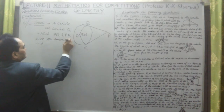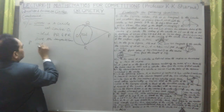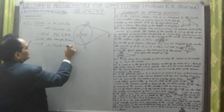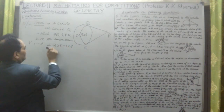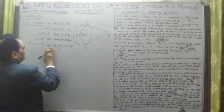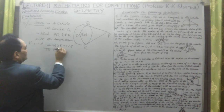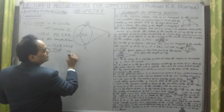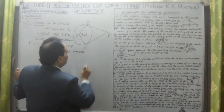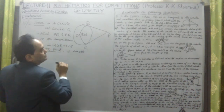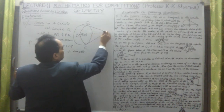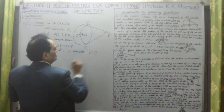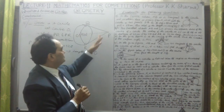Given: a circle with center O, in which PQ and PR are tangents from external point P, and angle QOR equals 120 degrees. We need to find the length PO — the distance from the center to the external point.